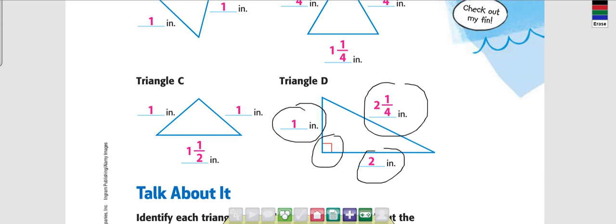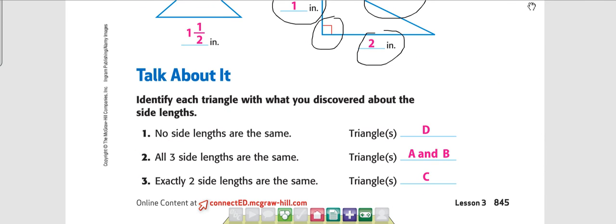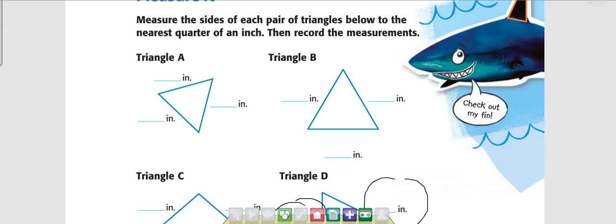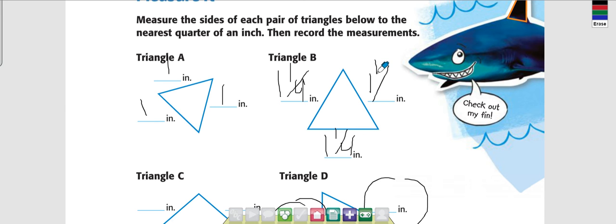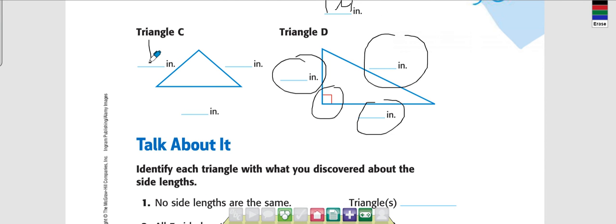So we have triangles A, B, C, and D. We're going to use those triangles to answer the questions at the bottom. Triangle A was one inch, one inch, one inch. Triangle B was one and one-fourth inch on all sides. Triangle D had one inch, one inch, two and one-fourth inch, and two inches.